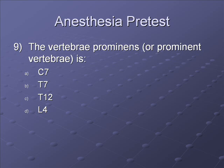Question 9: The vertebra prominens, or prominent vertebra, is — A. C7, B. T7, C. T12, or D. L4. Obviously it's not D, L4, so that leaves choices A, B, and C. The correct answer is A, C7.